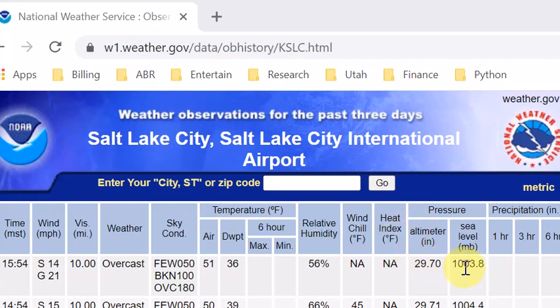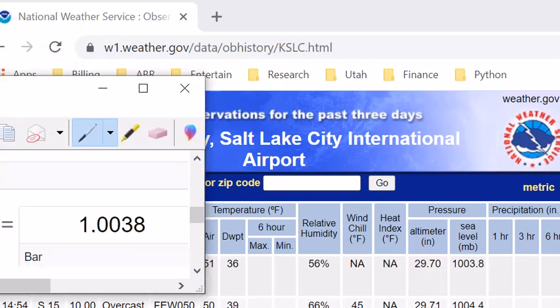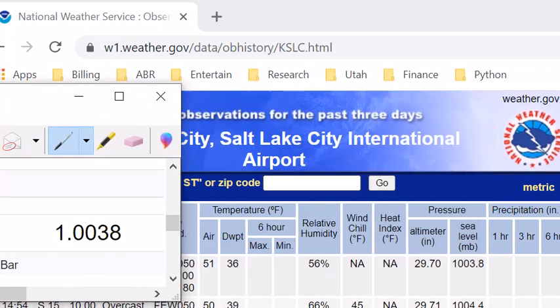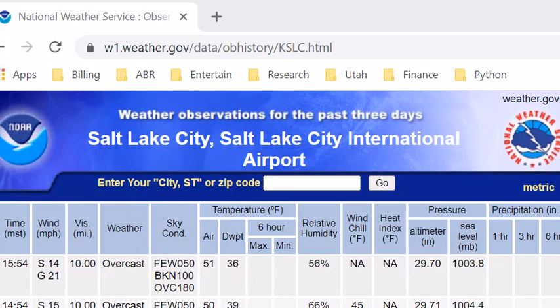This website lists the pressure, which is 1003.8 millibar, and when converted to Pascal, it's 100,380 Pascal or 100.38 kilopascal. So the question is, can we just use this pressure from the airport website as our pressure for the PTP correction?